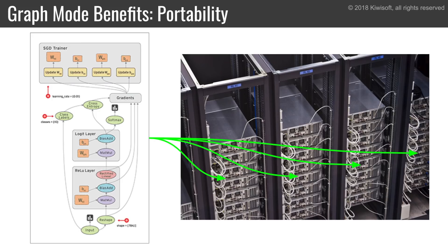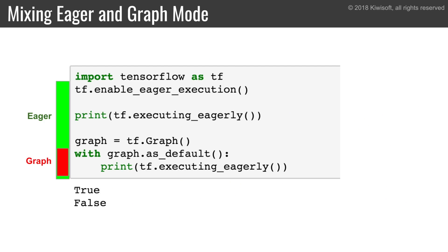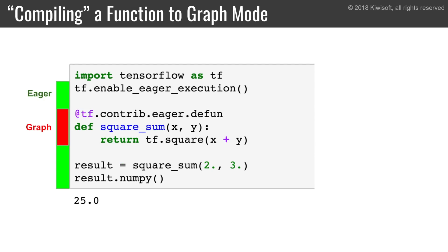The good news is that TensorFlow supports both eager mode and graph mode. For example, this program runs in eager mode, but within the with block, it runs in graph mode — it's not executing eagerly. After the with block, the program would be back to eager mode.